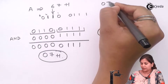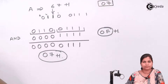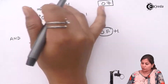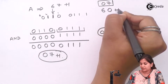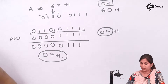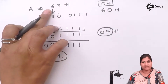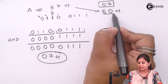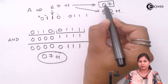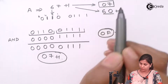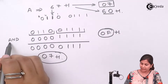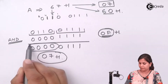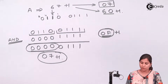So after masking the upper nibble of 67h we get 07h. If we were masking the lower nibble instead, we would get 60h — the 7 is removed and only 6 remains. So whenever we AND any number with 0Fh it masks the upper nibble, and this is the logic we are going to use in our program.